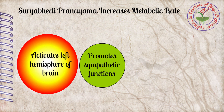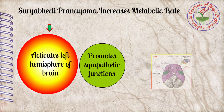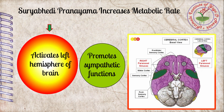Surabhedi pranayama increases metabolic rate. In this practice, inhalation is done through the right nostril by closing the left, and exhalation through the left nostril by closing the right. Continuous inhalation through the right nostril stimulates the nerve plexus in the mucus lining of the right nose, which is connected directly to the autonomic nervous system.